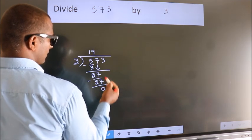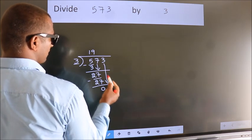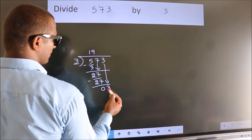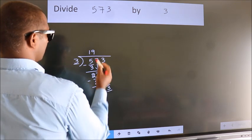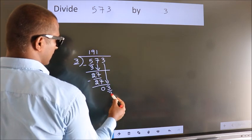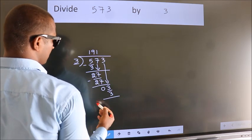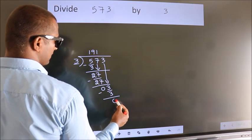After this, bring down the beside number. So 3 down, giving us 3. When do we get 3? In the 3 table, 3 1s 3. Now we subtract. We get 0.